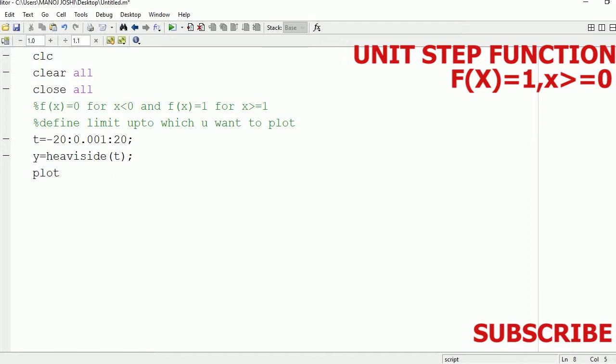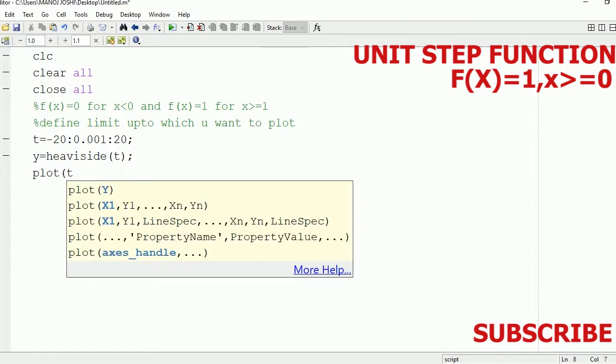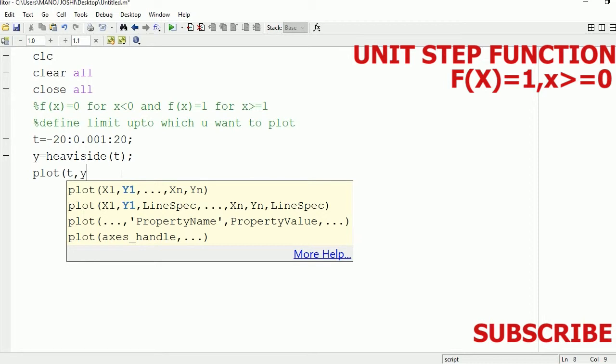Now after that we're going to plot this signal and see the output on the figure window. Now plot(t, y) - t is on the x axis, y is on the y axis. And also we can set the line width to 3.